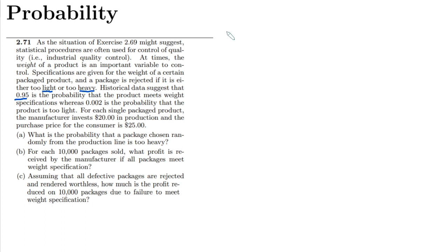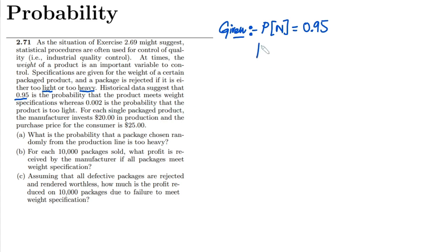Let me write the given data here. The probability of normal weight P(N) is equal to 0.95. Similarly, the probability of too light P(L) is equal to 0.002. For each single package product, the manufacturer invests $20 in production and the purchase price for the consumer is $25.